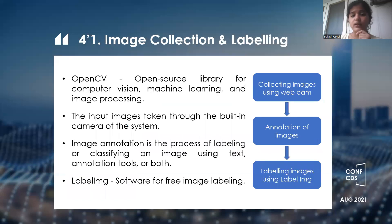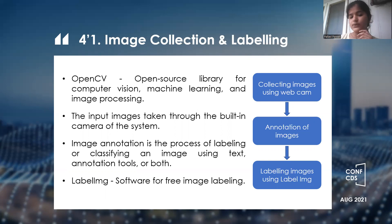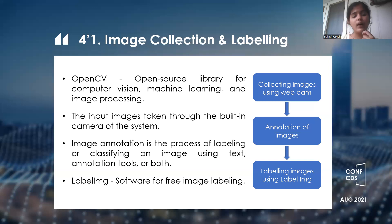The methods involved start with image collection and labeling. For collecting the images, we are using OpenCV, which is an open source library for computer vision that helps to process and collect images. The input images are taken from the built-in camera or an external source. Since we take a lot of images, it can be difficult to know which image represents which sign. So the main step here is to annotate the images. Annotation is nothing but naming the images — for example, naming a particular sign as 'hello' or 'hi'.